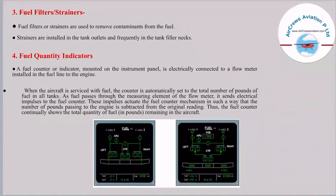Fuel filters or strainers are used to remove contaminants from the fuel. Strainers are also installed in the tank outlets and frequently in the tank filler necks. A fuel counter or indicator mounted on the instrument panel is electrically connected to a flow meter installed in the fuel line of the engine. When the aircraft is serviced with fuel, the counter is automatically set to the total number of pounds of fuel in the tanks.